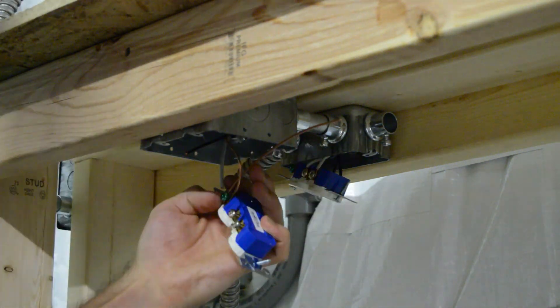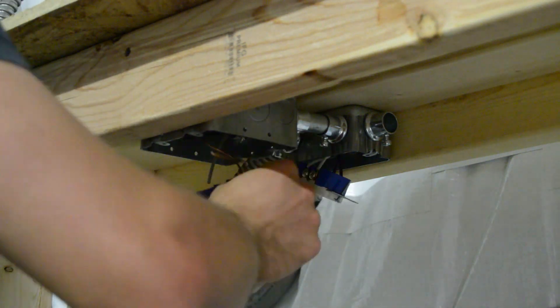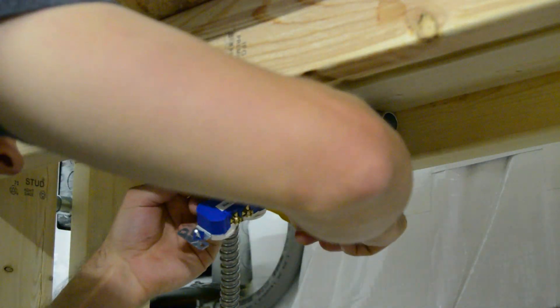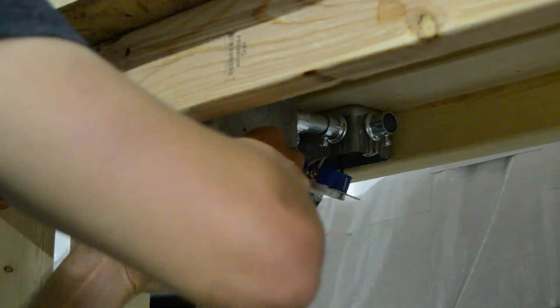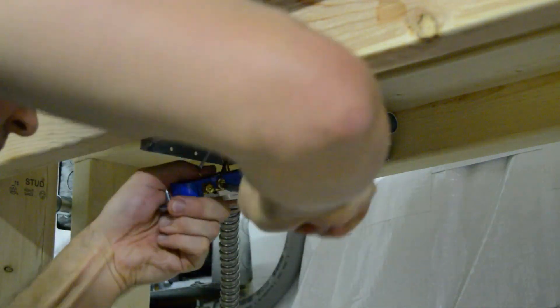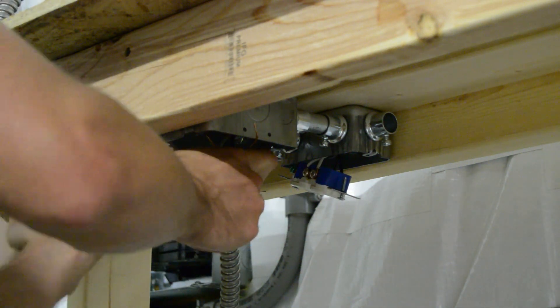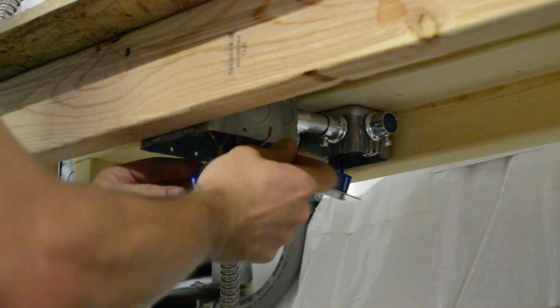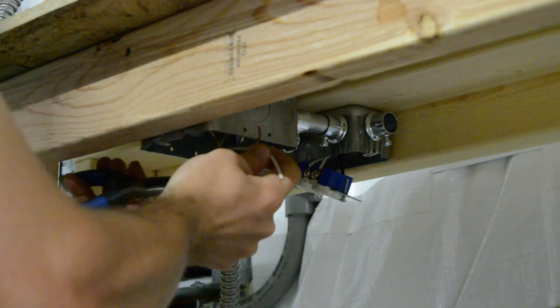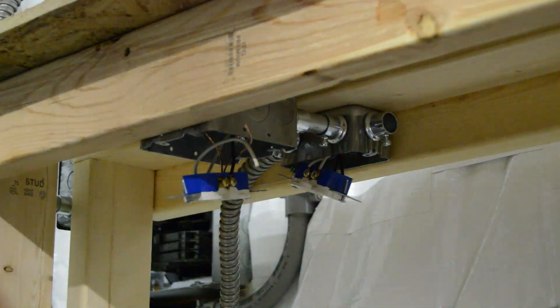Next we're going to wire the 120 volt outlets that are going to be underneath the shelf. These are just standard home outlets. There's going to be nine of them, and basically in packs of three.